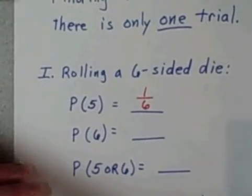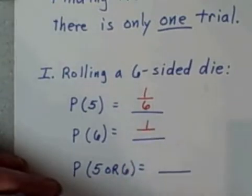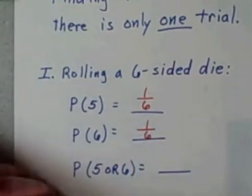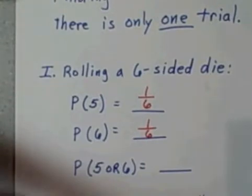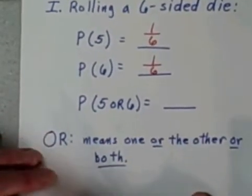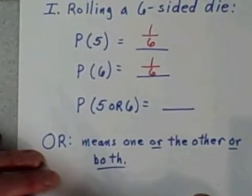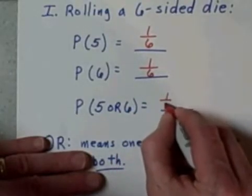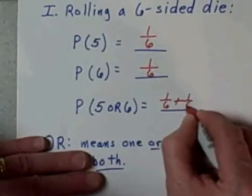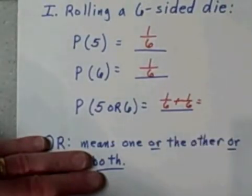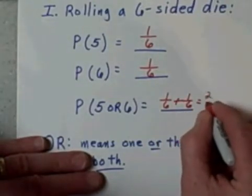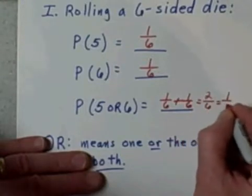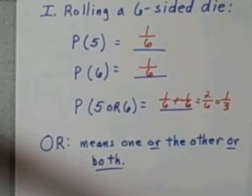And the probability of rolling a six on a six-sided die, once again, there's only one six, but there are six possible outcomes, so it's again one out of six. The probability of rolling a five or a six is pretty straightforward. Its probability is simply the probability of rolling a five plus the probability of rolling a six, or as you could probably just visualize, that's really two out of six, which reduces to one-third.